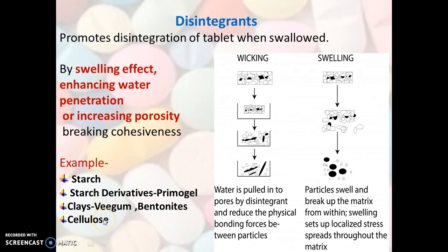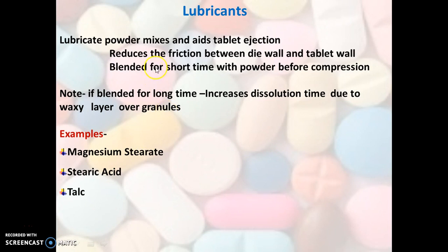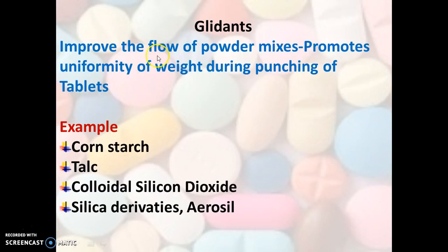The next class is lubricants. Lubricants lubricate the powder mixes and aid tablet ejection by reducing friction between the die wall and tablet during compression. Lubricants are blended for a short time with the powder before compression. If blending is too long, it may cause a decrease in dissolution due to a waxy layer forming over the granules, which increases hardness. Examples are magnesium stearate, stearic acid, and talc.